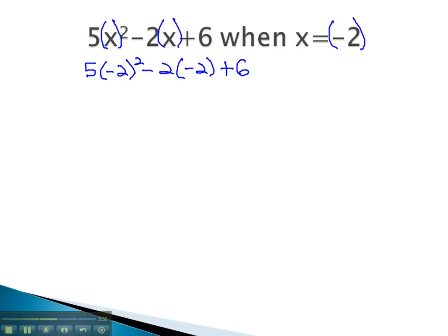Now, using order of operations, we can simplify the expression, doing the exponent first. Negative 2 squared is positive 4, minus 2 times negative 2, plus 6.